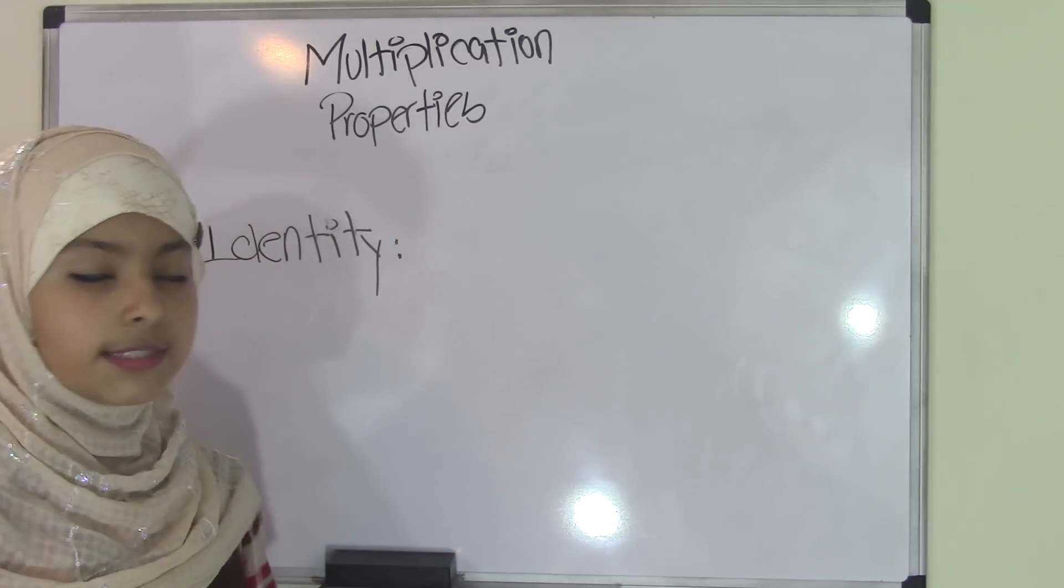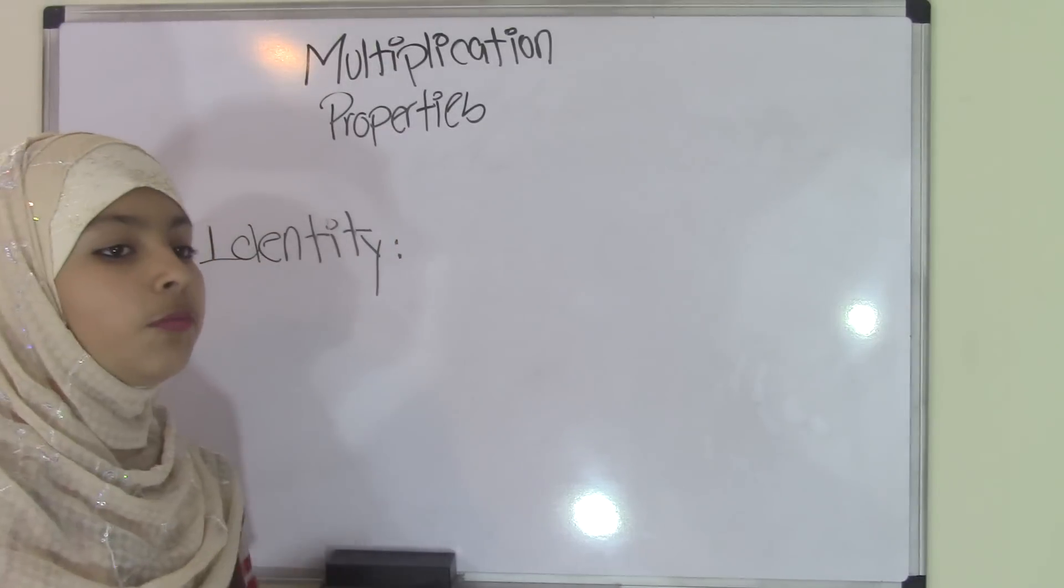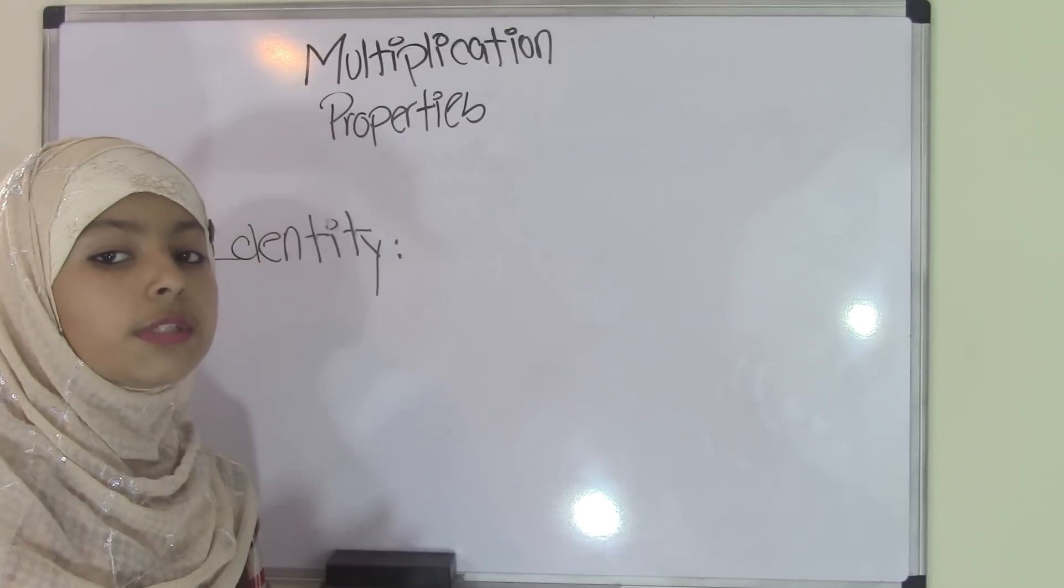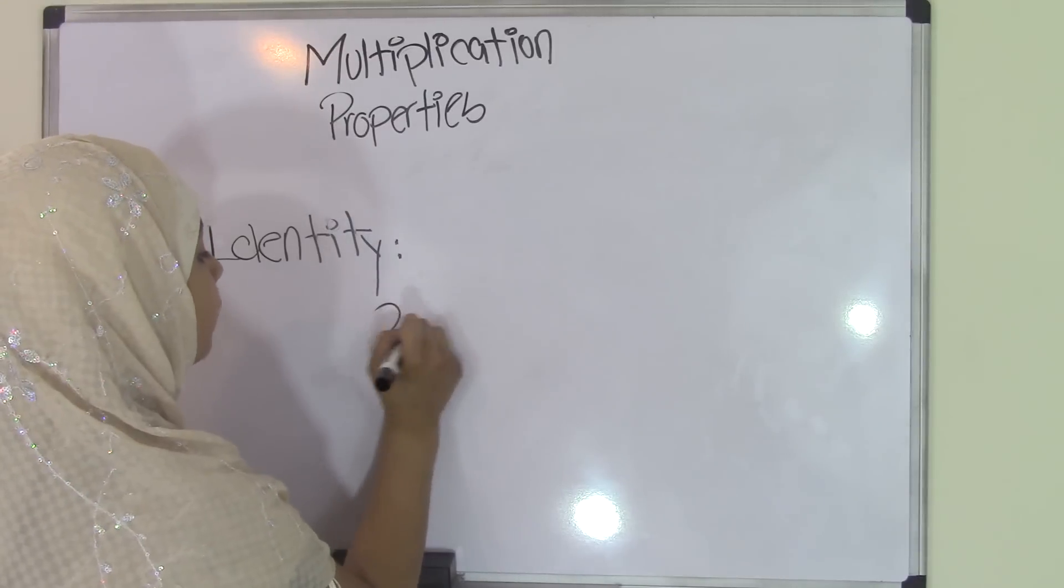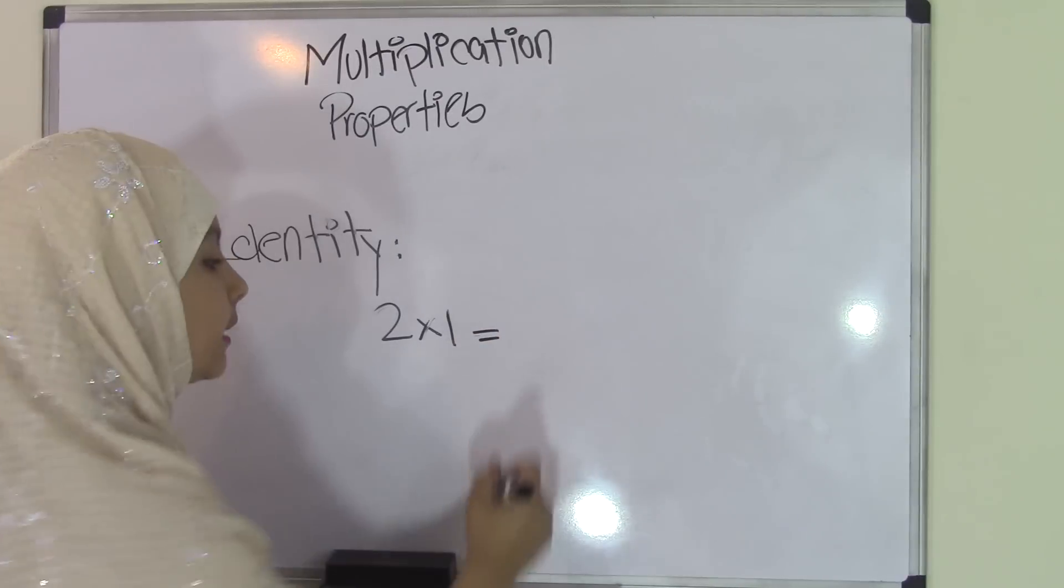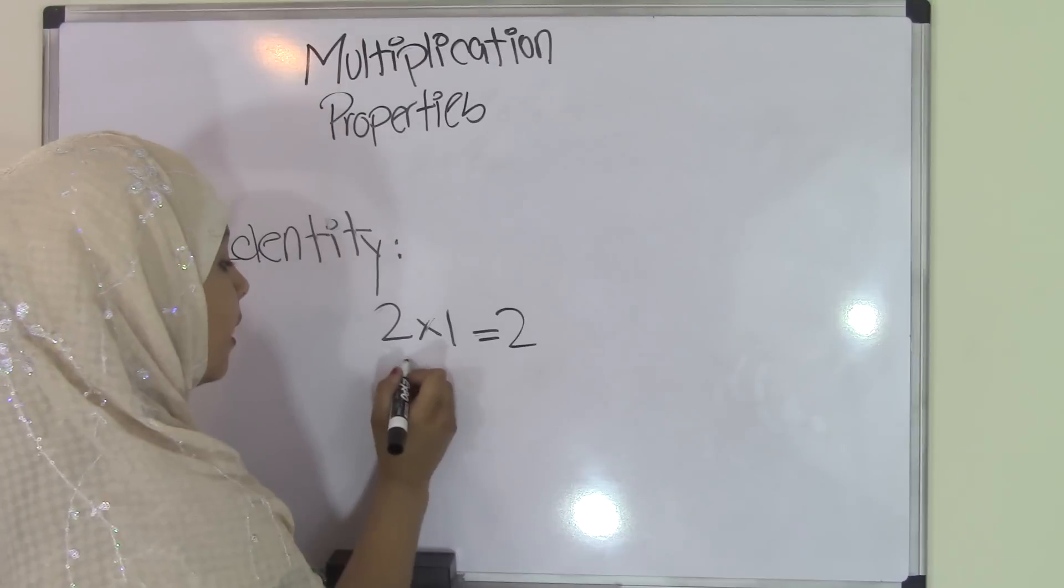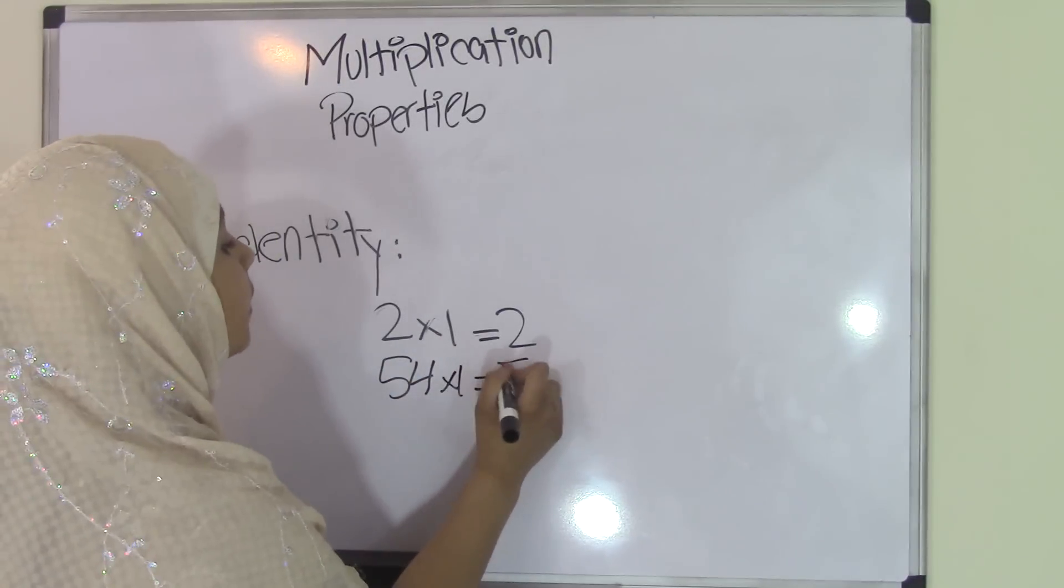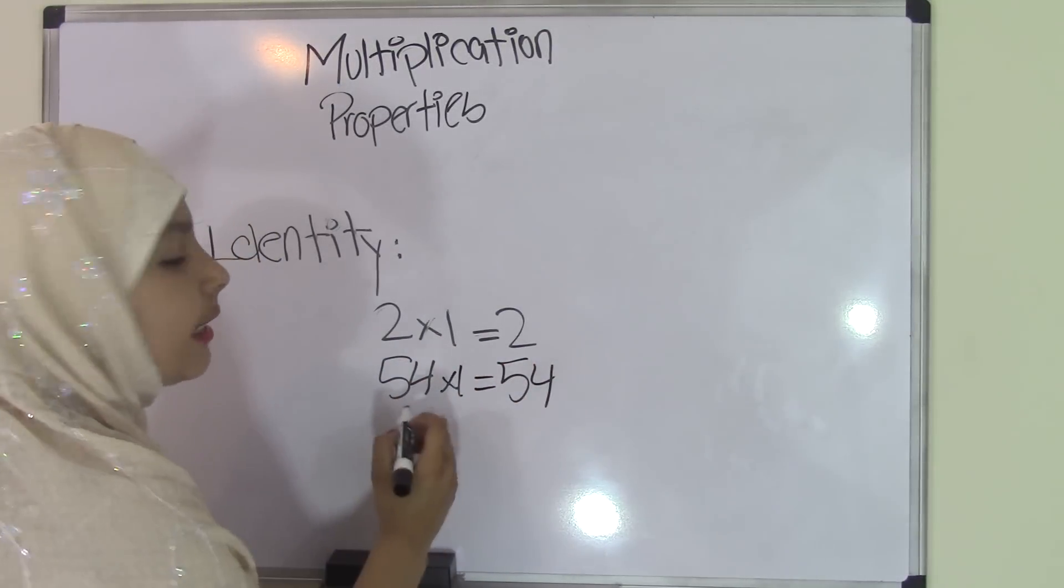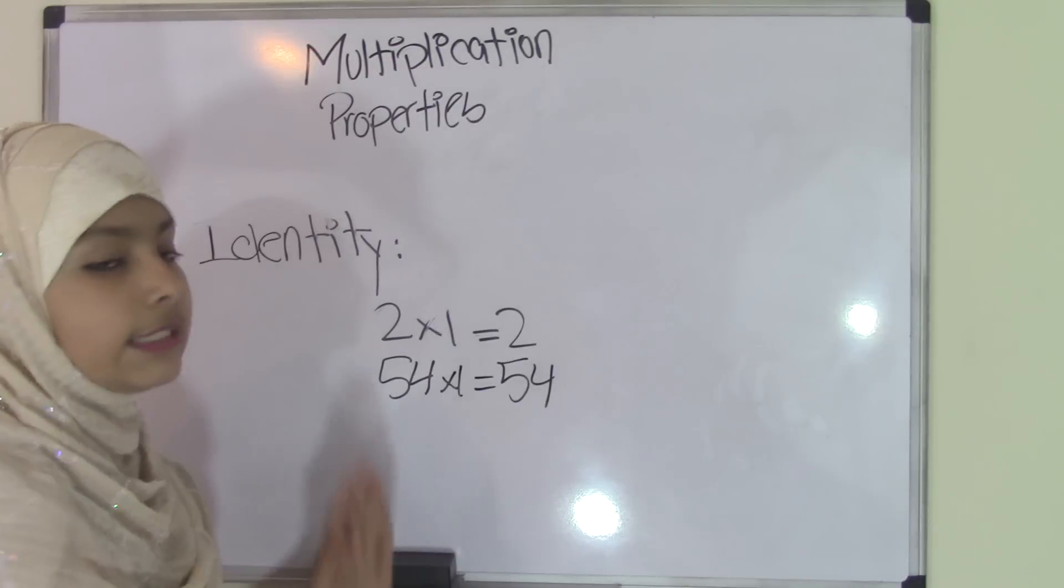So in identity property, if you multiply any number by 1, you will get the same answer. So what I'm trying to say is, if you have 2 times 1, your product will always equal 2. If you have 54 times 1, you will still get 54. So that is the identity property because you're still getting the same product.